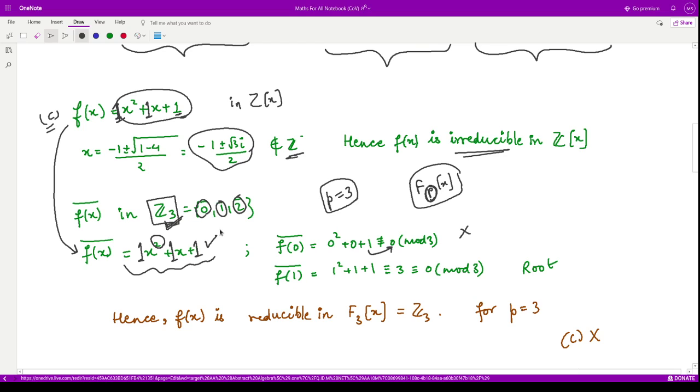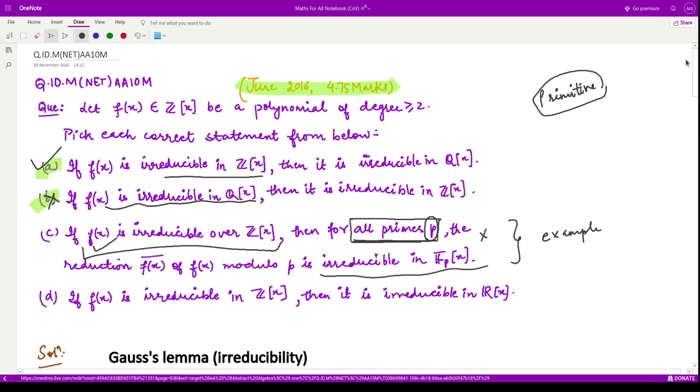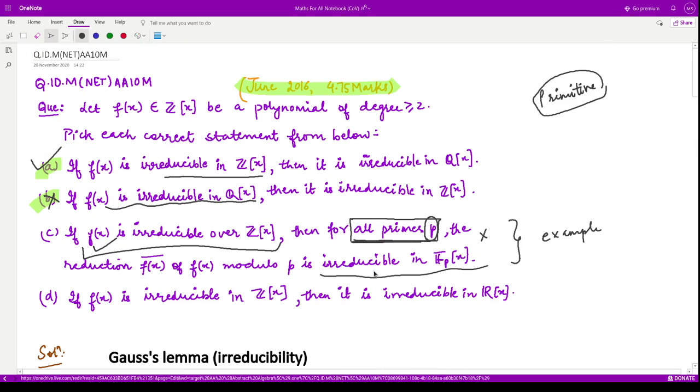We will check for f(0), which comes out to be 1, which is not equal to 0 mod 3. Therefore, this is not a root. We will check for 1. So when you substitute 1 in place of x into f(x), you will get 3. When you divide 3 by 3, you will get the remainder as 0. So obviously this is a root of f in Z_3. So now that means this polynomial f has a root in Z_3. This implies this polynomial is reducible in Z_3. We find p = 3 for which it is reducible in F_p, therefore this option is incorrect.